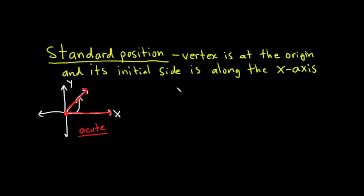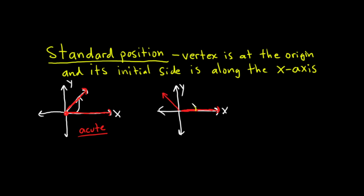Let's look at another example of an angle in standard position. Here's the x-axis and here's the y-axis. This will be the initial side, and this is the terminal side, and here is our angle. This is an angle in standard position, and in this case it's called an obtuse angle because its measure is between 90 and 180. So you can see two examples of angles in standard position.